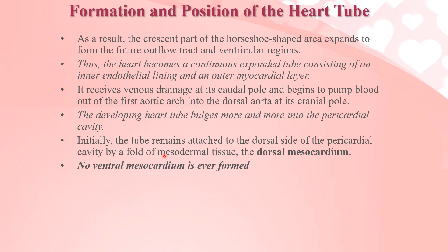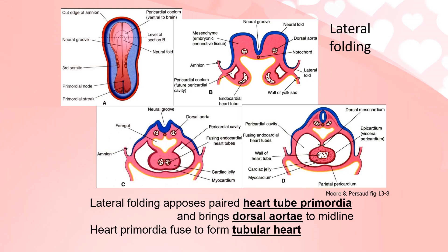The developing heart tube bulges more and more into the pericardial cavity. Initially the tube remains attached to the dorsal side of the pericardial cavity by a fold of mesodermal tissue called the dorsal mesocardium; no ventral mesocardium is ever formed. In this diagram, lateral folding of the embryo brings the two endocardial tubes closer to each other, and later the tubes fuse.